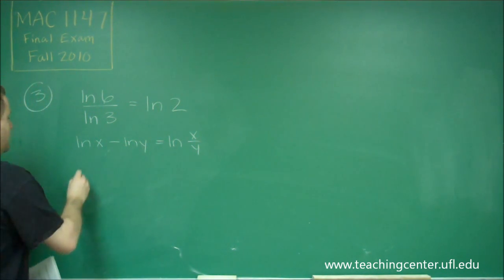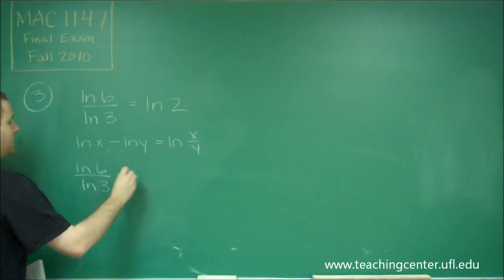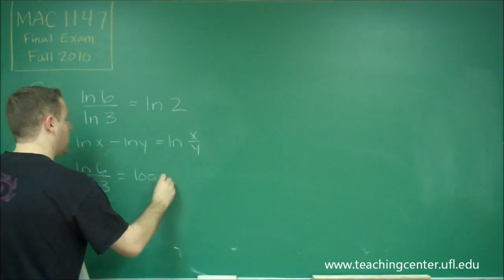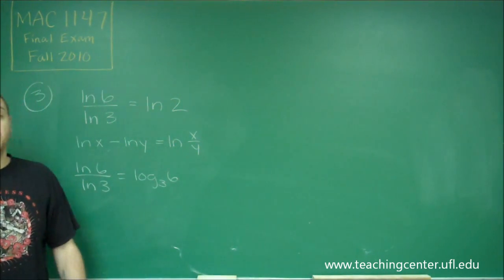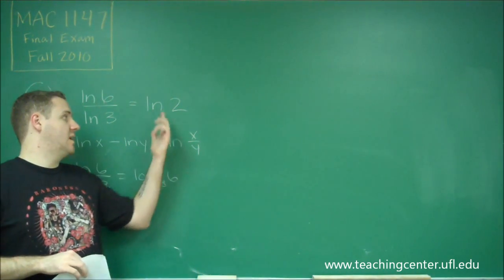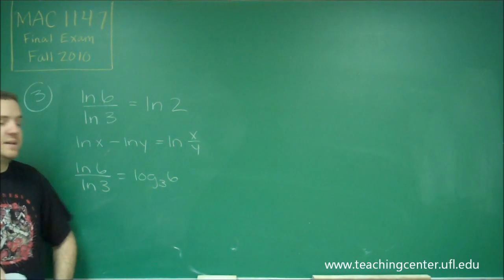But even in that case, you could say that ln6 over ln of 3 is equal to log base 3 of 6 using the change of base formula. But log base 3 of 6 is definitely not the same thing as ln of 2.